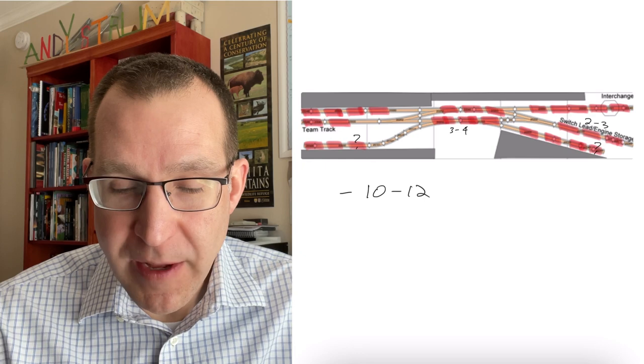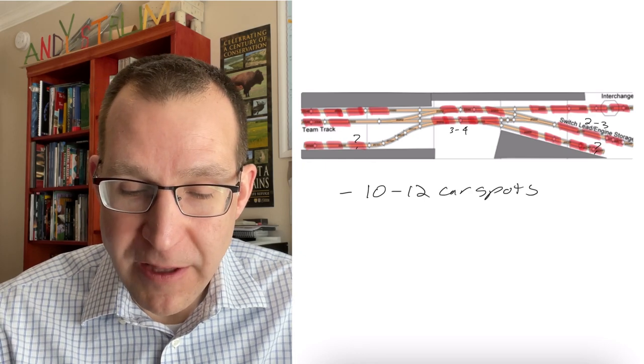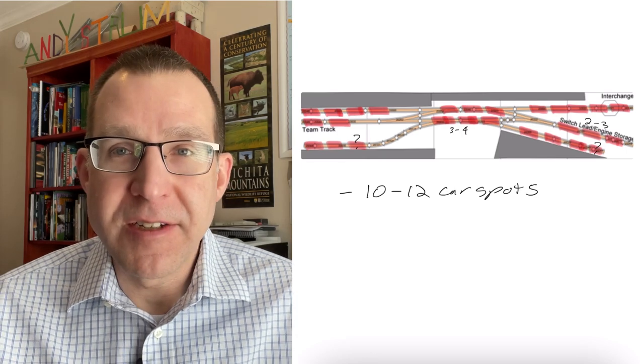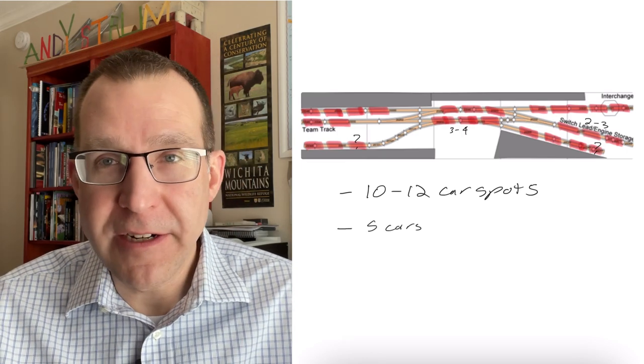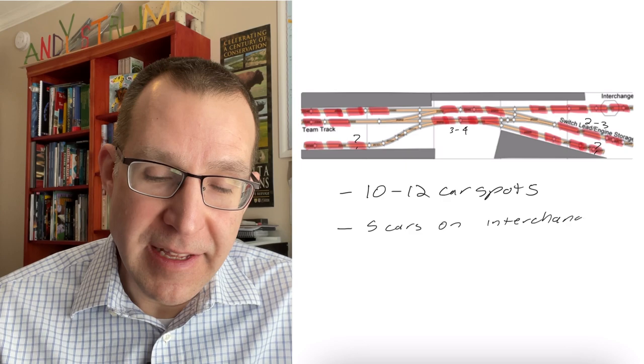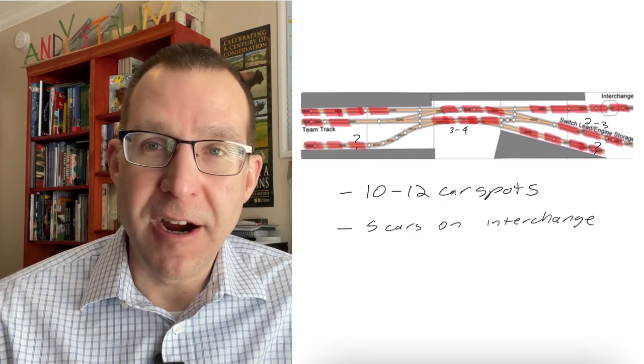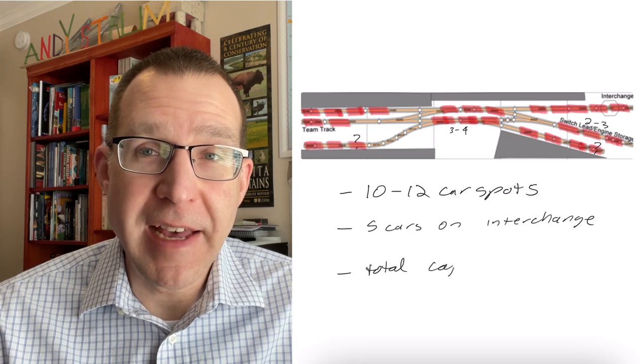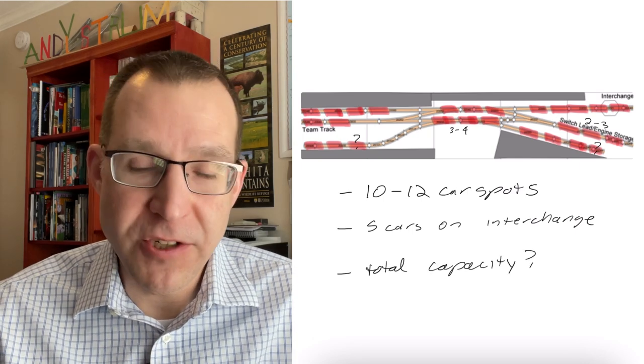So that's kind of what I'm looking at here for the overall design of this layout. So again, 10 to 12 car spots, five cars on the interchange, and probably the way I will do this, six or something cars already spotted, and I'll have a few cars on the interchange, and some of those will get spotted at spots where there's already a car there. So most of the time when I operate, I'll probably have about 12 cars on the layout at any given time, including on the interchange.